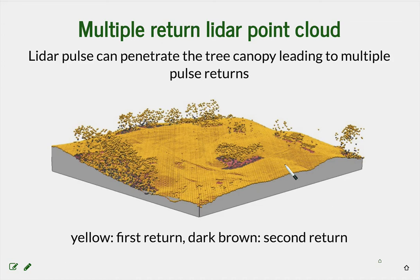While you can get a point cloud that goes below the vegetation canopy with structure from motion if there are large enough openings, it is much more challenging to derive them. That's why there is strong interest in putting LiDAR on UAS — it allows us to capture the structure of vegetation in a more accurate and comprehensive way than structure from motion allows.